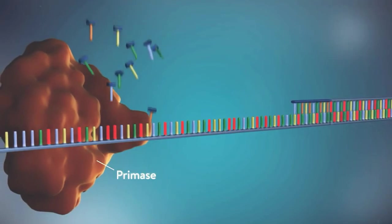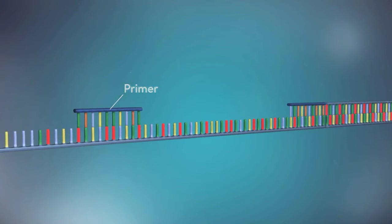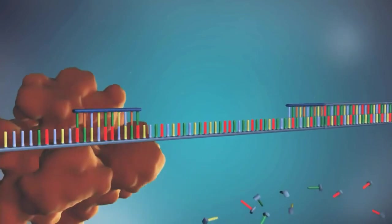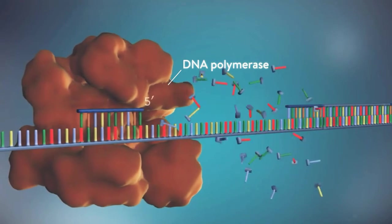Each fragment is started with an RNA primer. DNA polymerase then adds a short row of DNA bases in the five prime to three prime direction.